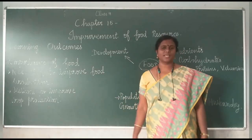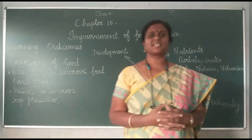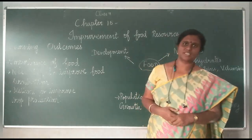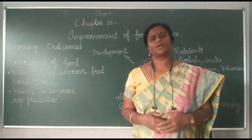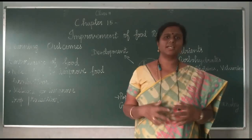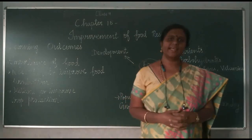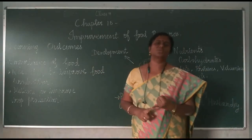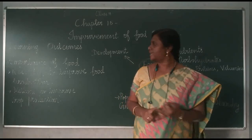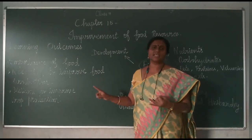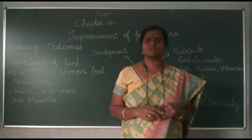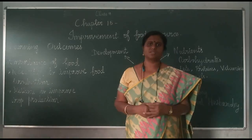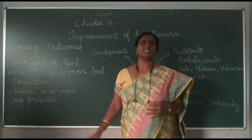The first chapter we are going to deal with — actually I am going to deal with chapter 15 as the first chapter, which is known as the Improvement of Food Resources. Before we go into this lesson, let's look at the learning outcomes: what we are going to learn at the end of this session. First, you should know the importance of food. Second, what is the necessity to improve food production? And number three, what are the methods to improve food production? We are going to see all of this in this session.